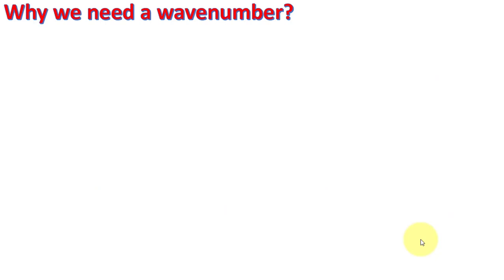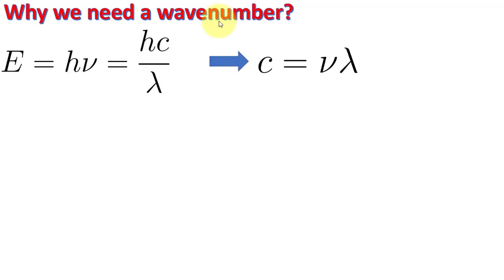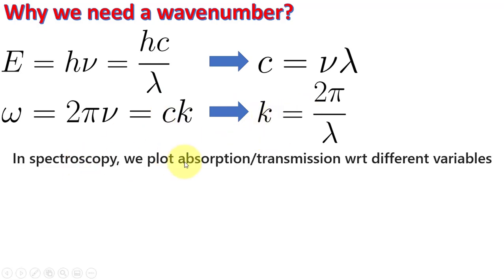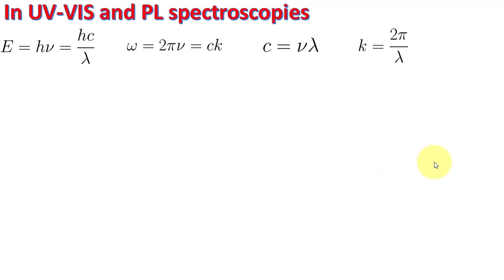The key question is: why do we need wave number if wavelength and frequency already exist? We know E = hν = hc/λ, and ω = 2π/ν. From the dispersion relation, ω = ck, so k = 2π/λ. This wave vector k is what we call the wave number.